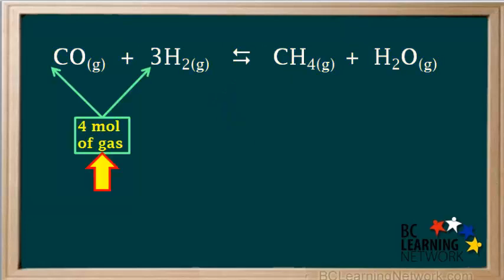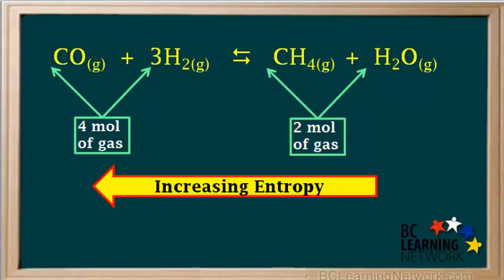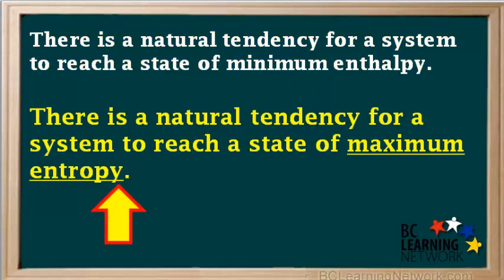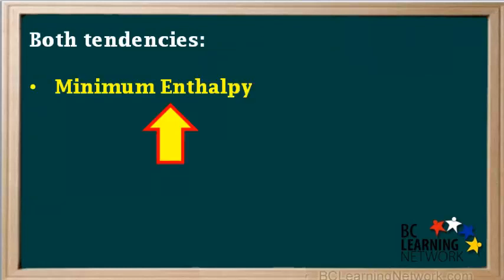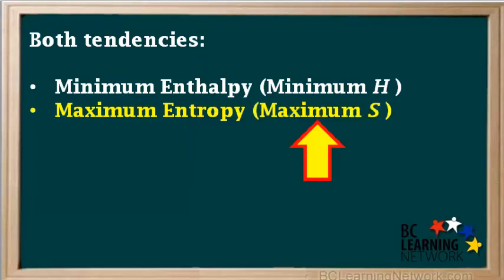Here's another example. There are four moles of gas on the left, or reactant side, and two moles of gas on the right, or product side. In this reaction, the reactants have higher entropy, or maximum entropy. We can also say that entropy increases as the reverse reaction occurs, or that entropy is decreasing as the forward reaction occurs. There's a natural tendency for systems to reach a state of minimum enthalpy, and there's also a natural tendency for systems to reach a state of maximum entropy.